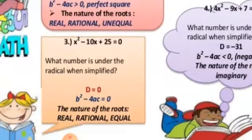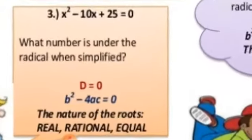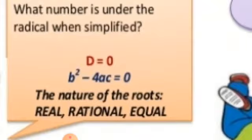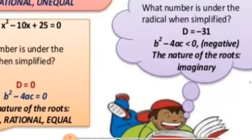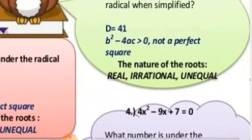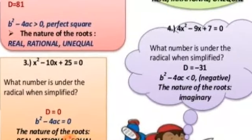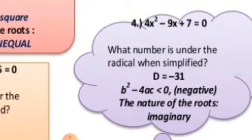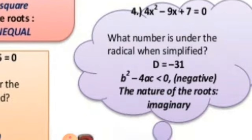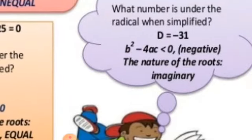Third case: when the discriminant equals zero, the nature of the roots are real, rational, and equal. Last case: when the discriminant is less than zero — a negative value — the nature of the roots is imaginary.